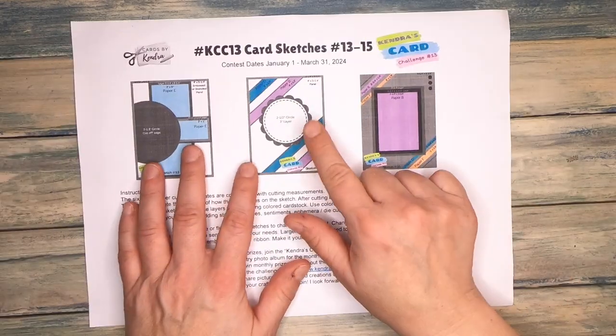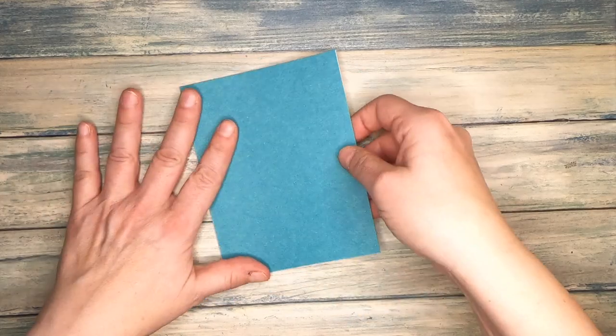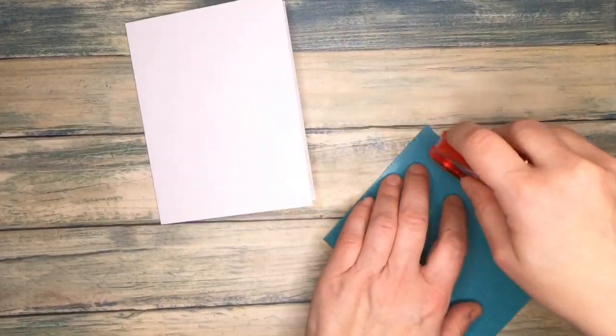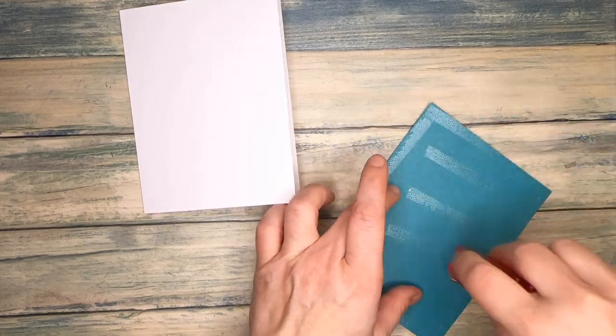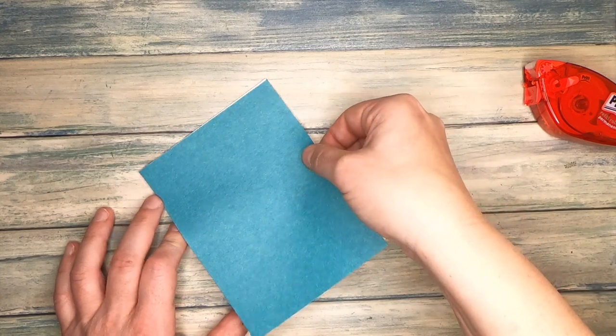So now most of our preparations are finished. We just need to cut out all the other layers and panels for the sketch number 14 and then we can put our card together already. This is a great advantage of Kendra's card challenge. You can either use the 6 by 6 patterned paper sheets to make all the 15 cards or you can use and choose a single sketch because all the instructions and measurements for the single cards are given as well in the pdf. This is what I'm doing now with my sketch number 14.